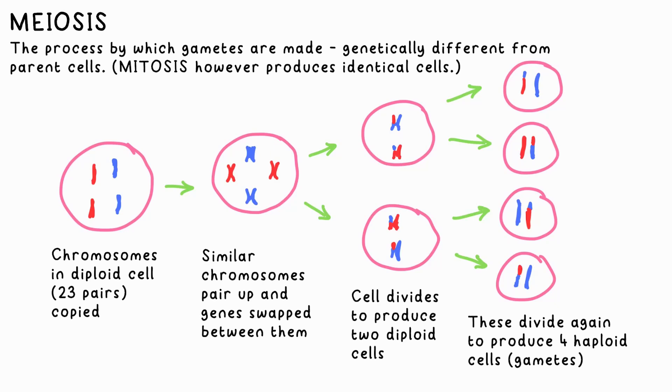This is one way that variation occurs in offspring, by the way. The resulting diploid cell then starts to divide via mitosis.